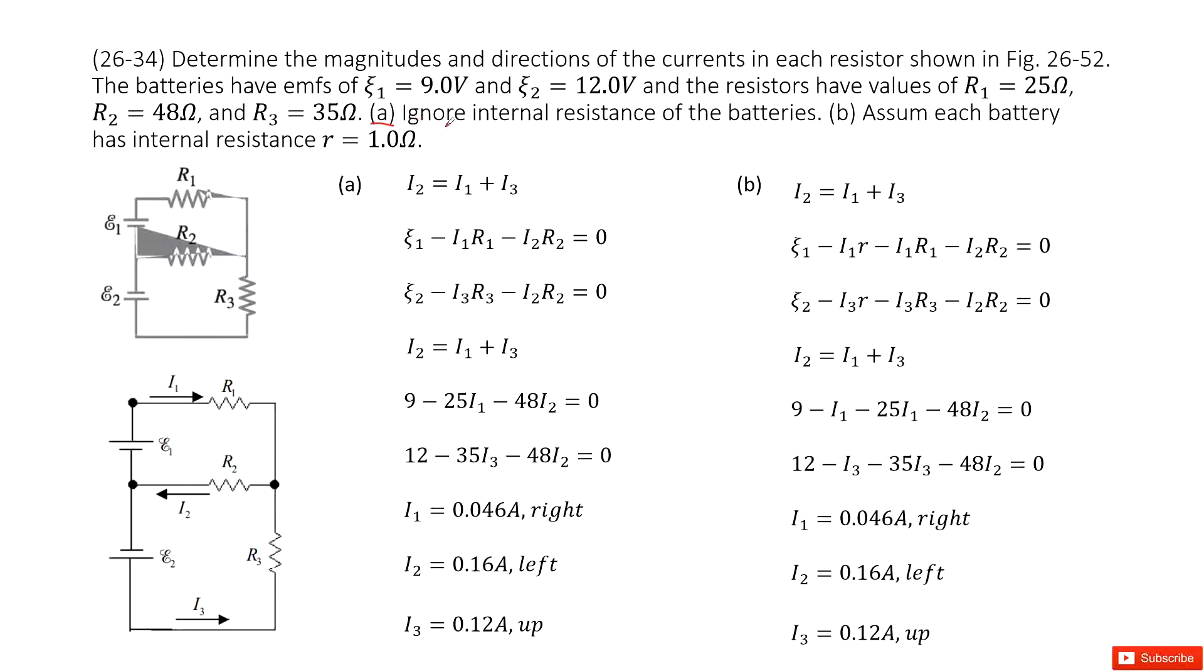ask us to ignore internal resistance of battery. So this means this is a perfect battery. We just consider the voltages for battery. So how can we do that?